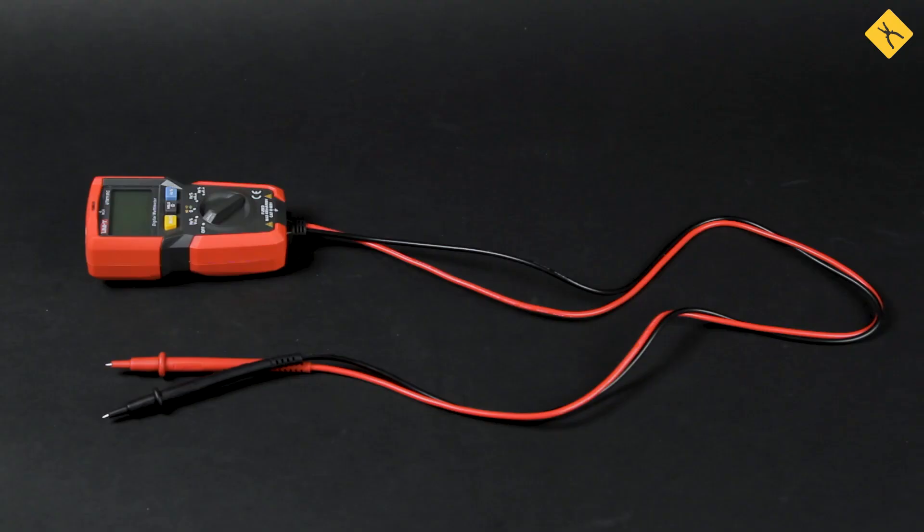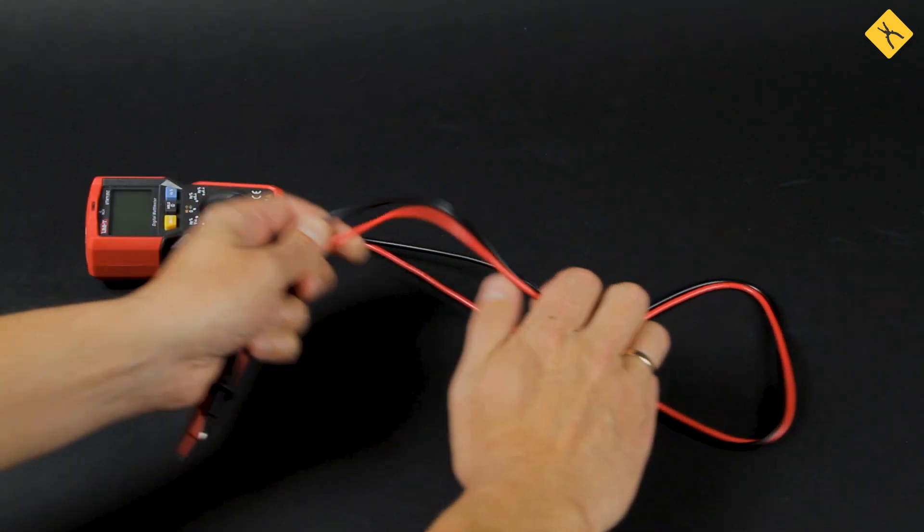Measuring probes should be 100% safe to use, since they will be in direct contact with measured objects. For example, Unity measuring probes are reliable, sturdy and elastic.